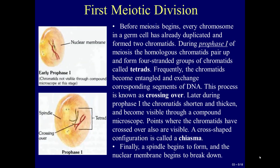Now we will describe meiotic division. It includes two stages: the first meiotic division and the second meiotic division. Before meiosis begins, every chromosome in a germ cell has already duplicated and formed two chromatids. During prophase I of meiosis, the homologous chromatids pair up and form four-stranded groups of chromatids, called tetrads. Frequently, the chromatids become entangled and exchange corresponding segments of DNA.